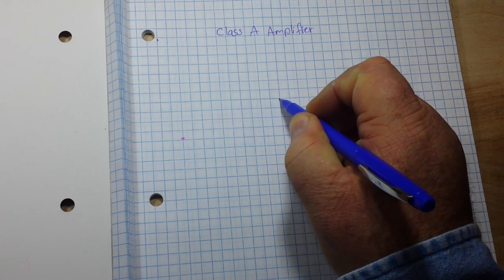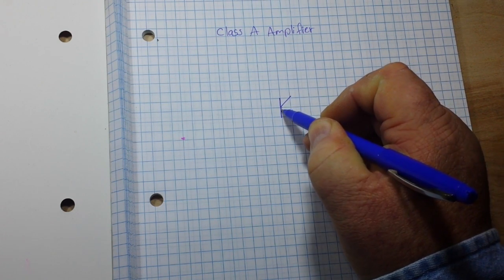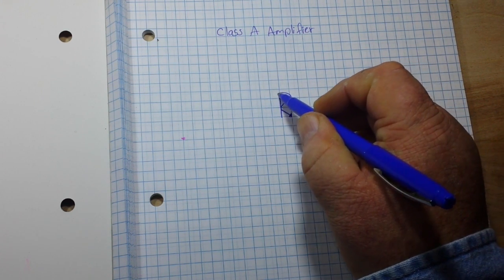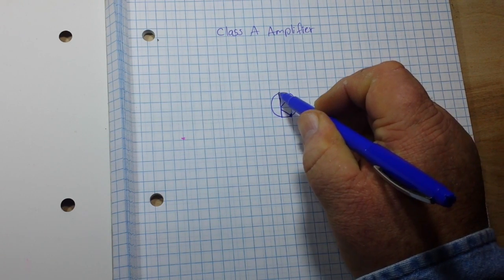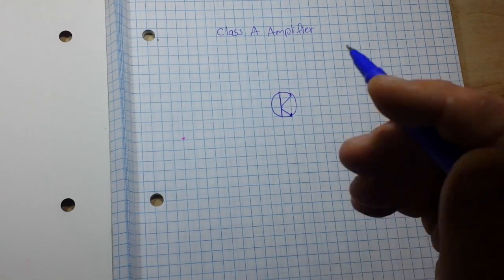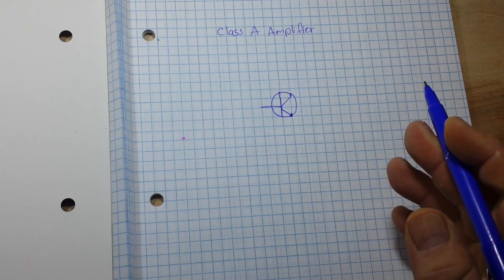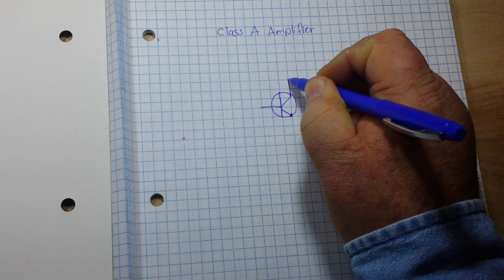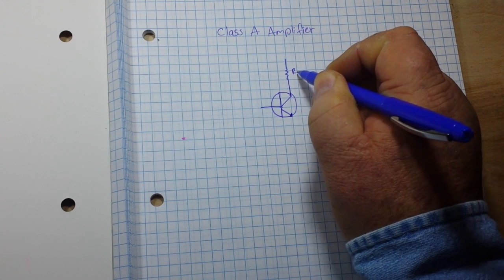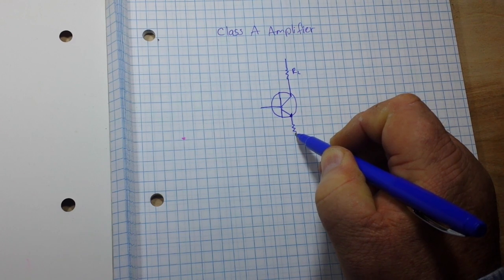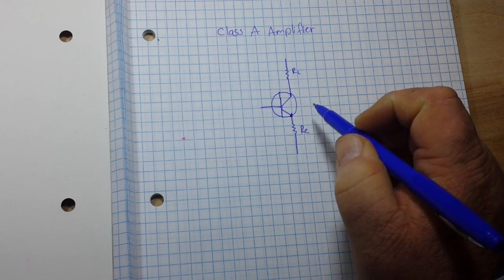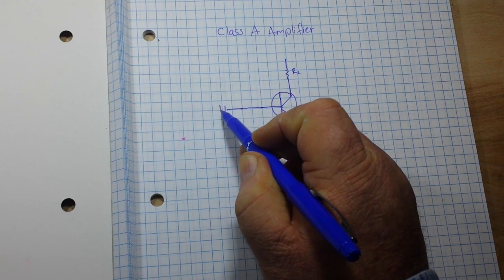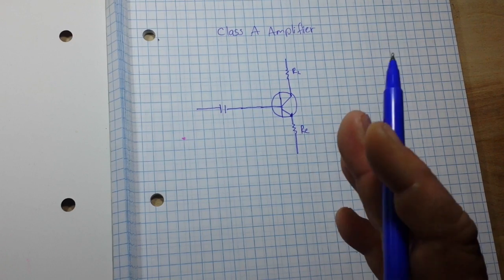So at the heart of our class A amplifier is a transistor. And while you can use a small signal transistor, you are better off using something that is more or less designed for power applications. So we are going to have a resistor here that we call our load resistor, and we will have a resistor here that we call the emitter resistor. Through our input here, we are definitely going to make sure that we use a capacitor.